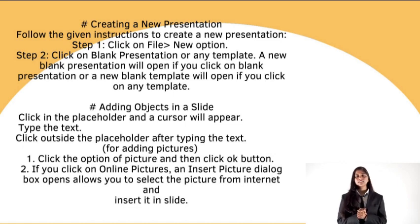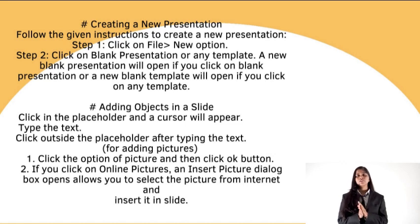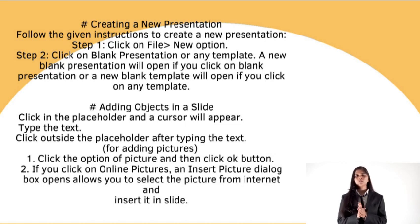To add objects in a slide, click in the placeholder and a cursor will appear. Type your text, then click outside the placeholder after typing. For adding pictures, step one is to click the Pictures option and then click OK. Step two, click on Online Pictures — an Insert Pictures dialog box will allow you to select a picture from the internet and add it into the slide.